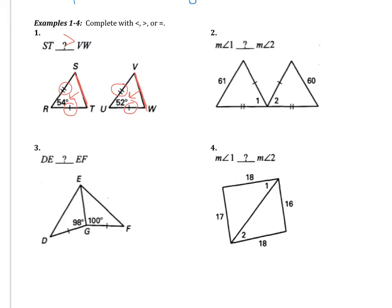Looking at example two, the hinge theorem applies again — one pair of congruent sides and a second pair. Comparing angles one and two, angle one is located across from the bigger side. 61 is compared to 60, and 61 is bigger, so angle one will also be bigger than angle two.